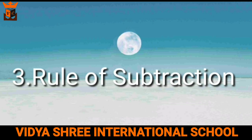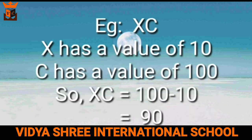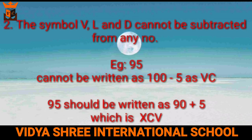The third rule is the rule of subtraction. If a symbol of smaller value is written to the left of the symbol of higher value, we subtract the smaller value from the higher value. For example, XC — X has a value of 10 and C has a value of 100, so XC equals 100 minus 10, which is 90. Note that symbols V, L, and D cannot be subtracted from any number. For example, 95 cannot be written as VC. 95 should be written as 90 plus 5, which is XCV.